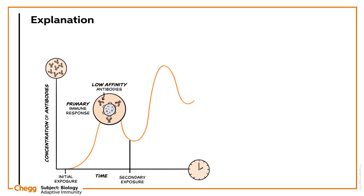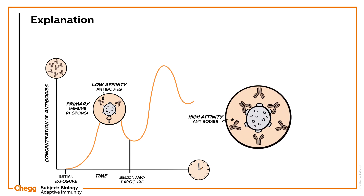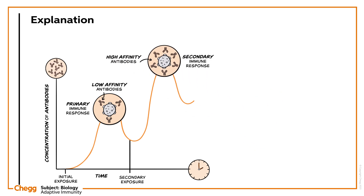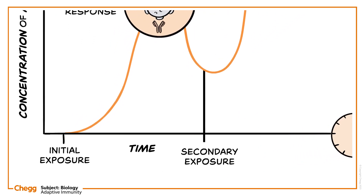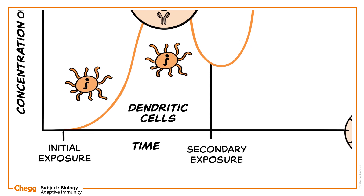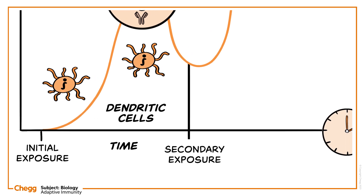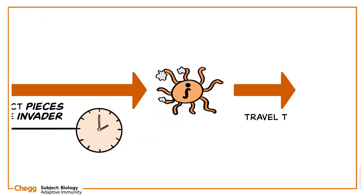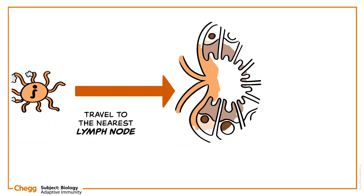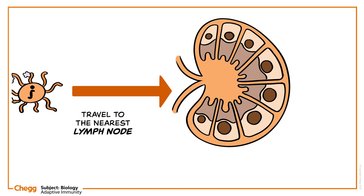It uses immunological memory to learn about the threat and enhances the immune response each subsequent time. The adaptive immune system provides more of a slow-acting targeted defence, but is more specific than the innate immune response. Dendritic cells are intelligence specialists. They collect pieces of the invader at the site and travel to the nearest lymph node. This triggers a cascade of events.